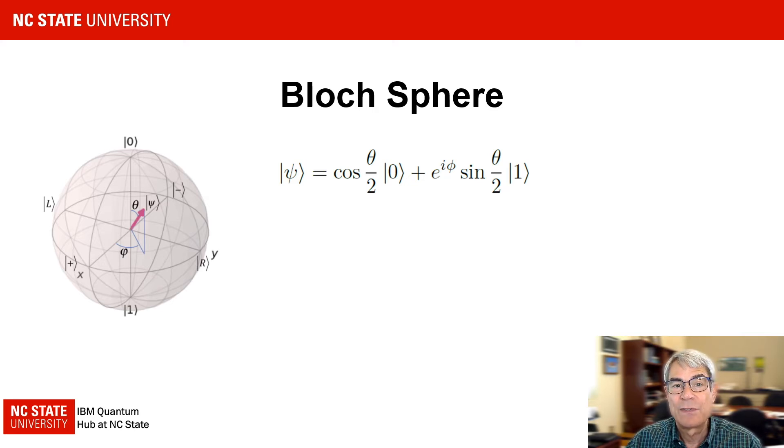Before we get started, you may notice some unexpected aspects of how states are represented on the Bloch sphere. For example, we know the states zero and one are orthogonal to one another. That is, their inner product gives zero. However, these states are depicted as collinear on the Bloch sphere.